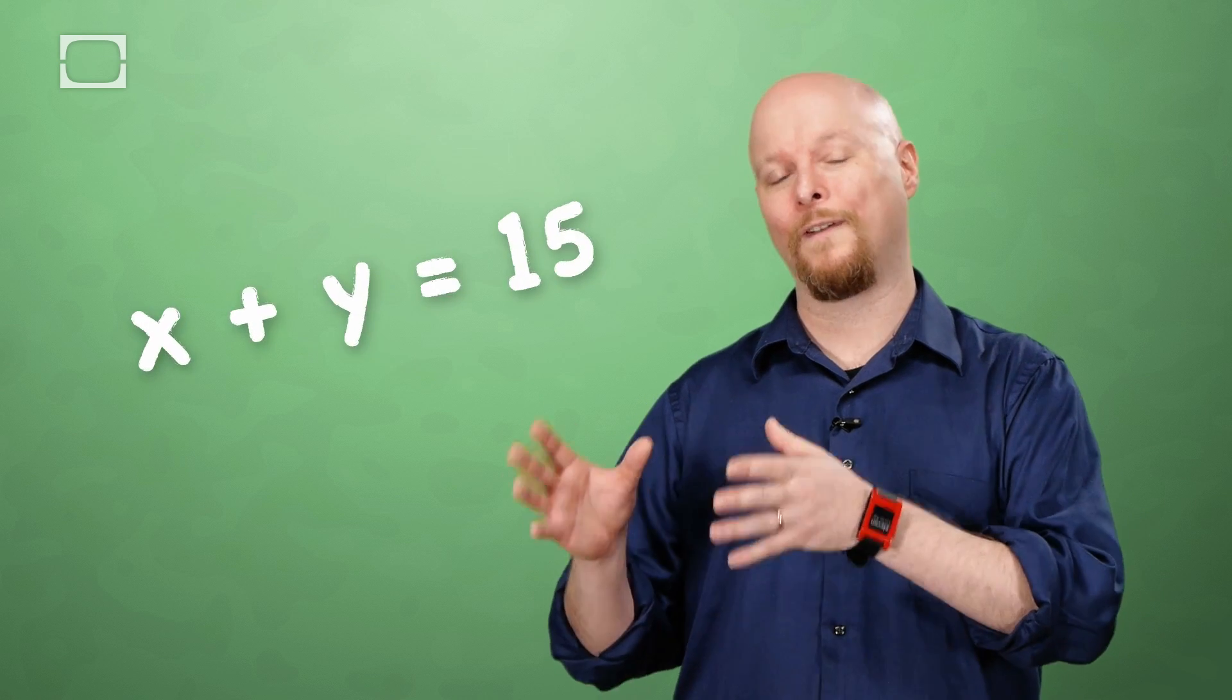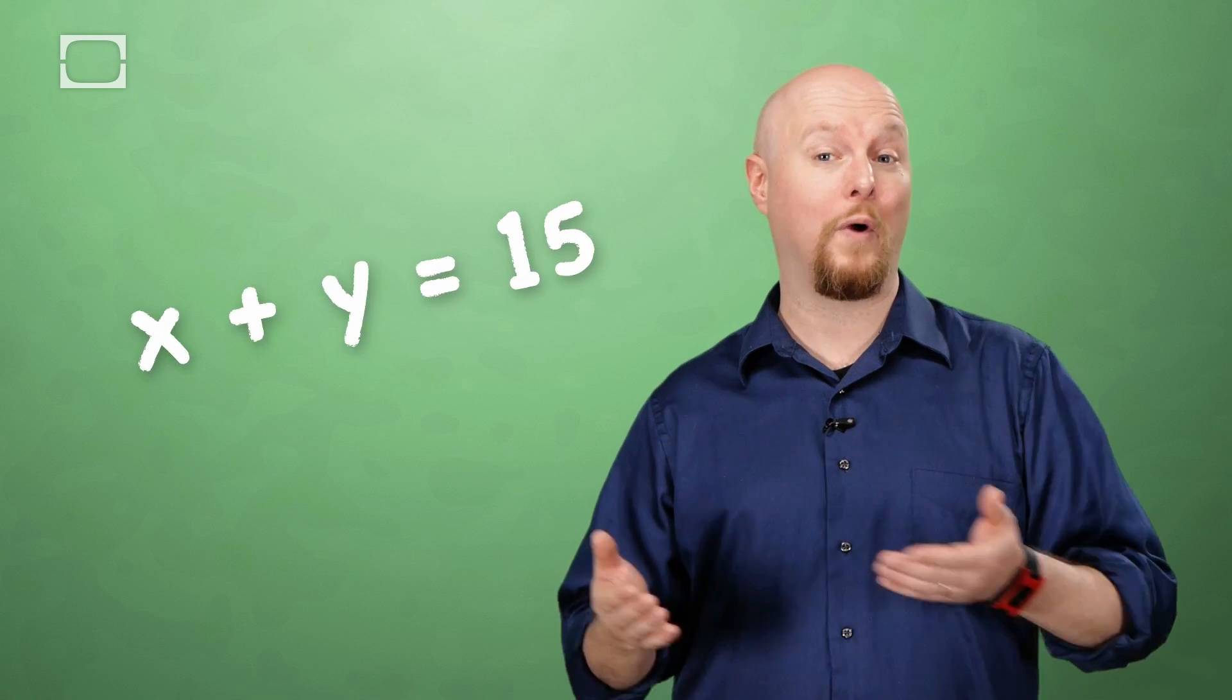Imagine the problem is something like X plus Y equals 15. Now if you can figure out what X and Y are, congratulations, you get a Bitcoin. With little competition, the problems are easier to solve. But when more people join the search, you've got to race and the problems get way more difficult.